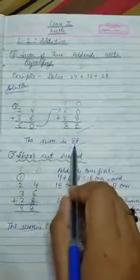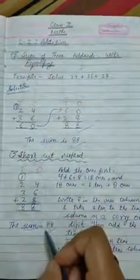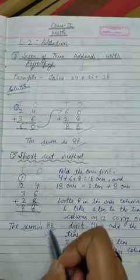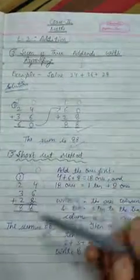यहाँ पर हमने तीनों को एक साथ जोड़ा है, तीनों को एक साथ add किया है तब भी हमारा answer जो sum है वो 88 आया तो आप इसको regrouping method से भी कर सकते हैं और shortcut method से भी add कर सकते हैं, the answer will be same.